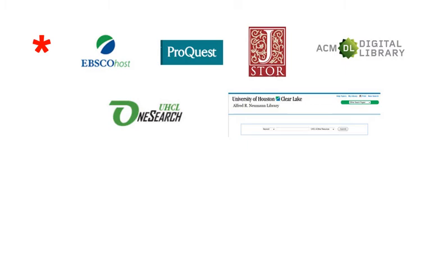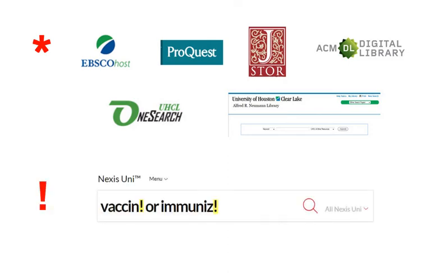Most databases, OneSearch, and the library catalog use the asterisk to find variant endings of a word stem. If using Nexus Uni database, however, use the exclamation point.